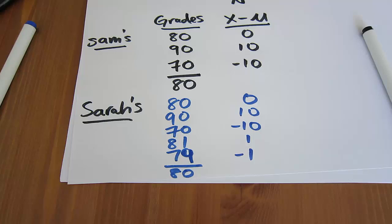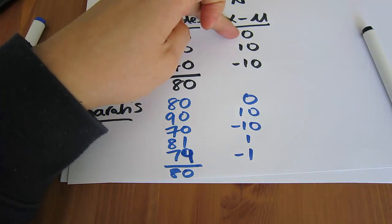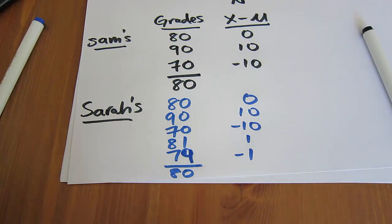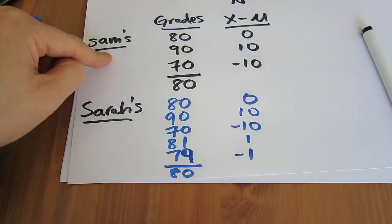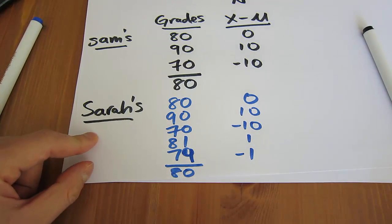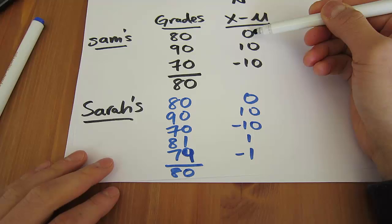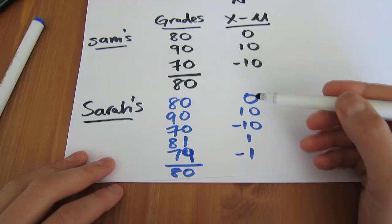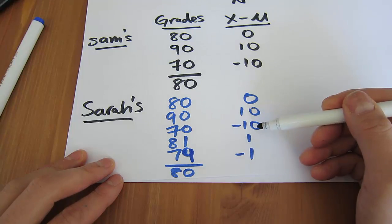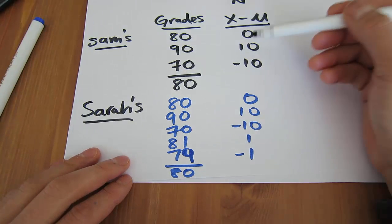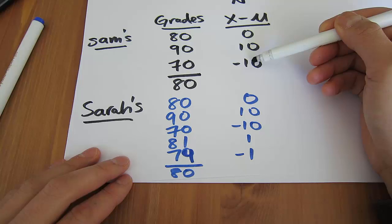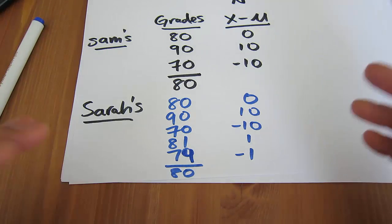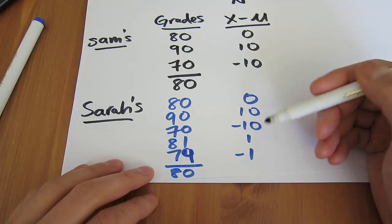So now the natural intuition from here would be to, well, we have all the spreads for individual observations. Why don't we sum them up to see what's the total spread for Sam and the total spread for Sarah? But you can see that if you sum this up, you get 0 plus 10 plus negative 10, you'll get 0. And again, you'll also get 0 here. And that happens because your negative deviations are cancelling out your positive deviations, and they cancel out perfectly until you get 0.